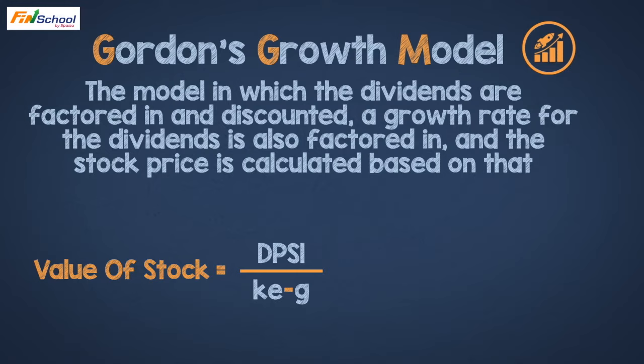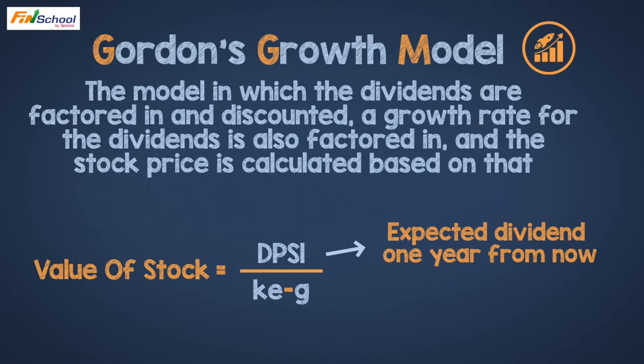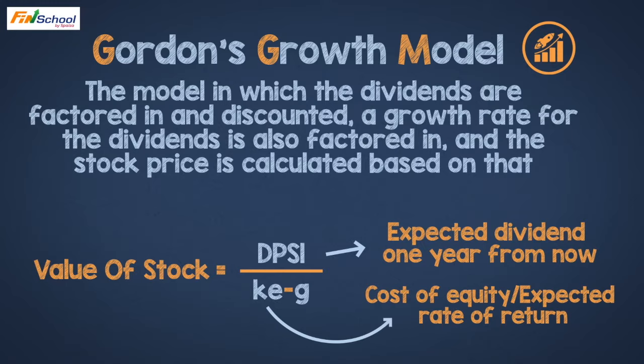Where DPS1 is the expected dividend one year from now — i.e., what dividend the company may announce next year. KE is the Cost of Equity, which is the investor's expected rate of return. Because the investor is taking higher risk by investing in stocks, their return expectation is also higher. KE calculates this return expectation.